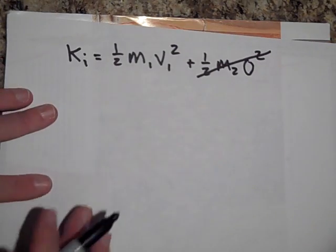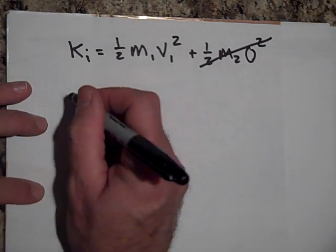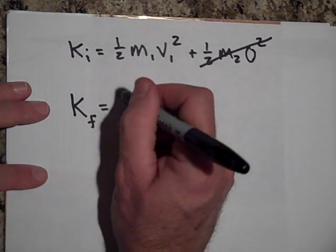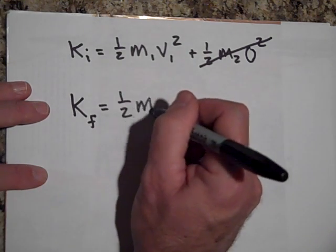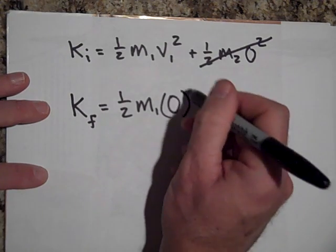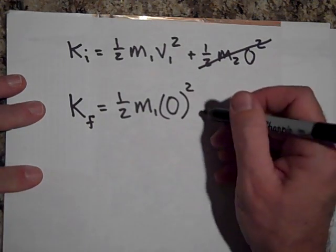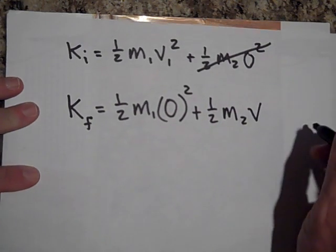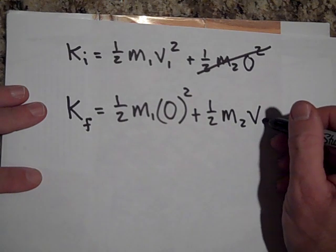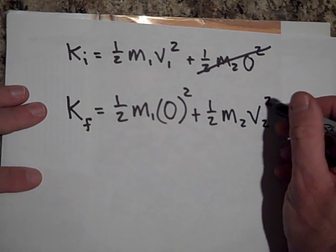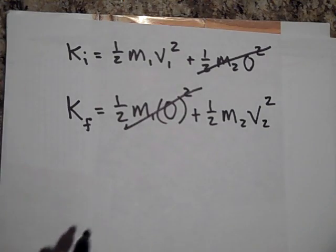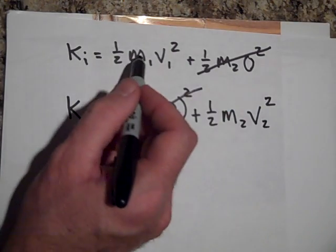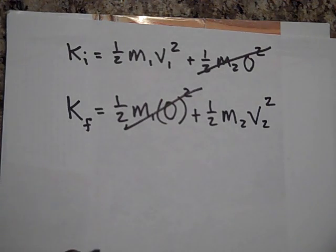And then at the end, the final, this one m1 stops, and the other goes with the same speed. So indeed, if v1 equals v2 and if m1 equals m2, yeah, the kinetic energy is conserved.